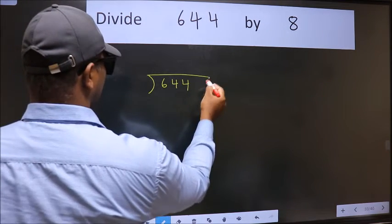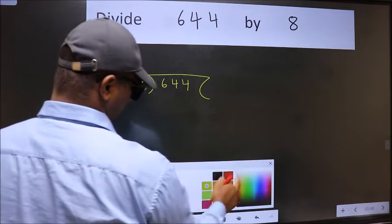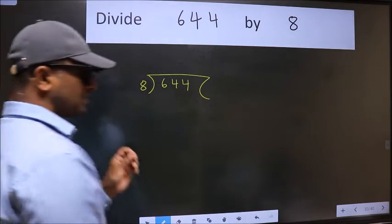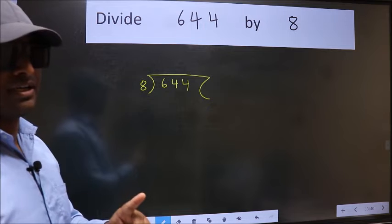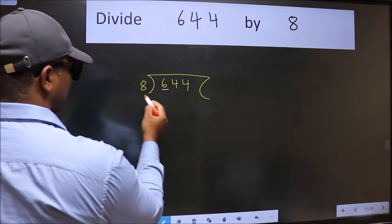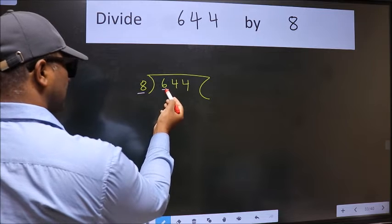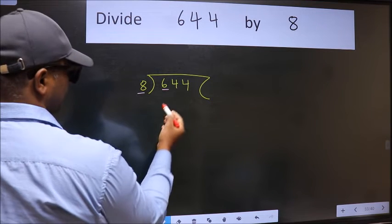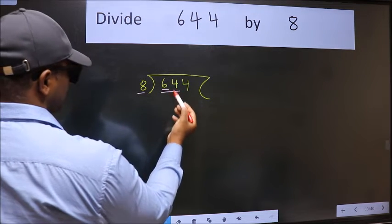644, 8 here. This is your step 1. Next, here we have 6 and here 8. 6 is smaller than 8, so take 2 numbers: 64.